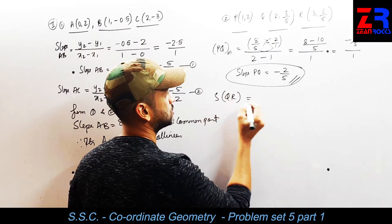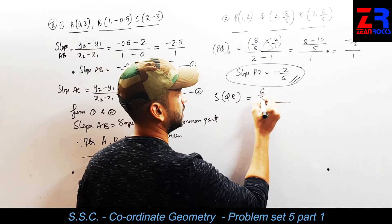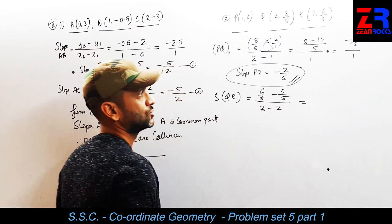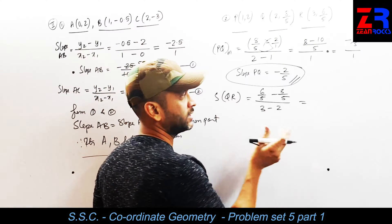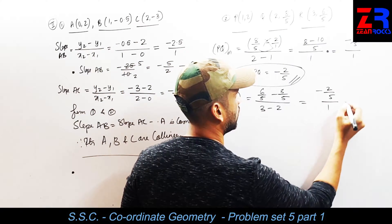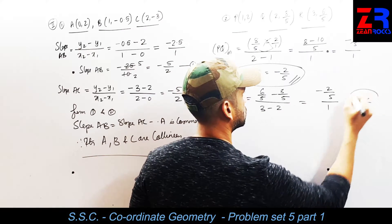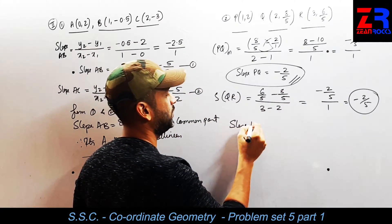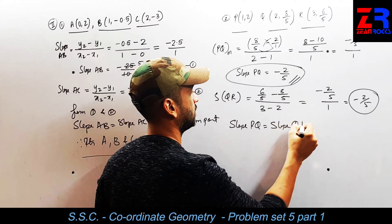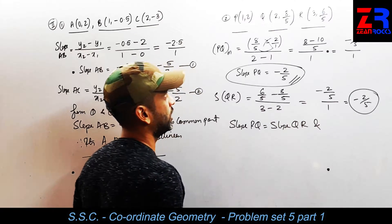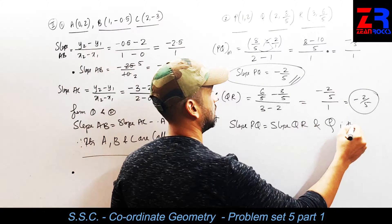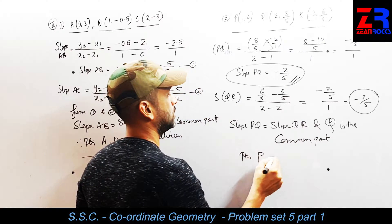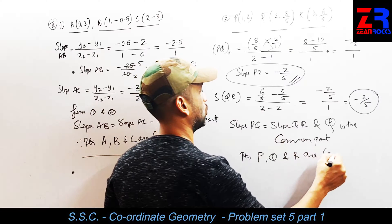Next is slope of QR. The formula is second number minus second number upon first number minus first number: 6 minus 8 upon 5. The denominator is the same, so it will be minus 2 upon 5. Slopes are equal. So I write slope of PQ equals slope of QR, and Q is the common point. Therefore points P, Q, and R are collinear.